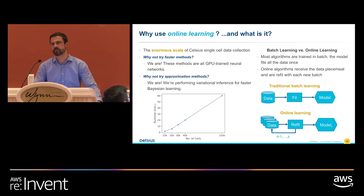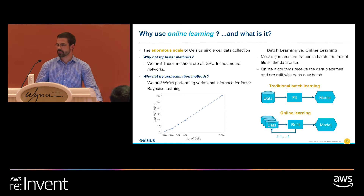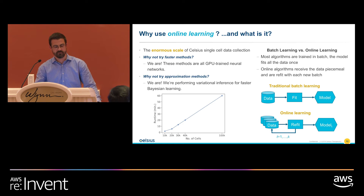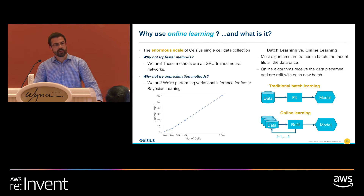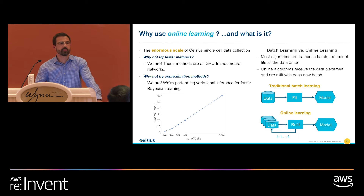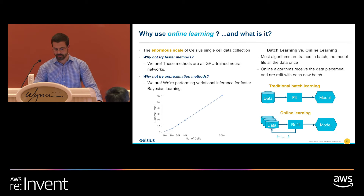The solution we've found is to perform online learning. Typically one would take all the data, train the model on everything at once, and when more data arrived generate a new model. That doesn't work for us because every time biologists want to interpret new data, if we fully retrain the model, they would have to reinterpret all the plots over and over again each time there are new samples. The way we're circumventing this is by performing online learning — tweaking the model with new samples as we receive them, in a way that does not entirely change the shape of the downstream data and enables biologists to remain familiar with the same plots they've been looking at.